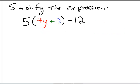Okay, let's try that one more time. Let's try to simplify the expression 5 times the quantity 4y plus 2 minus the number 12.